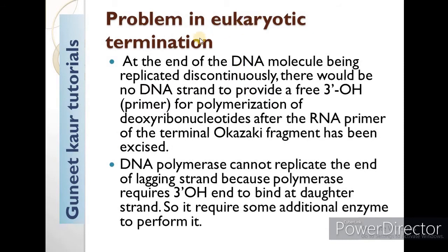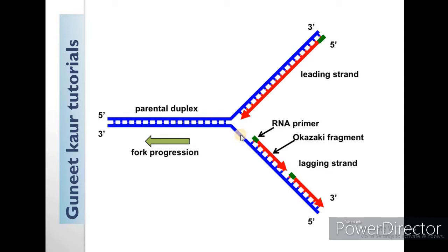So what is the problem in eukaryotic termination? This is the leading strand and this is the lagging strand. The lagging strand has DNA synthesized in the form of Okazaki fragments. The leading strand is the DNA that is continuously synthesized. The Okazaki fragments have a primer — the RNA primer is present at the front. When we remove the RNA primer, we have to synthesize using the free 3'OH end, so DNA polymerase requires the free 3'OH end.